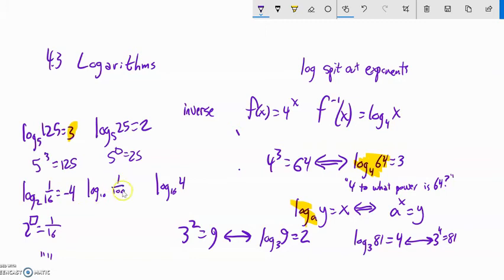All right, log base 10 of 1/100. Well, same thing then. 10 to what power is 1/100? I know it's going to be negative because it's this reciprocal. And then 10 squared is 100. So negative 2.